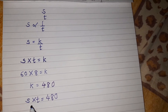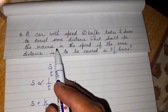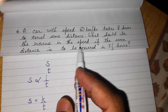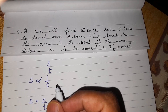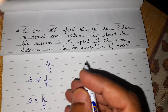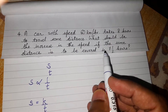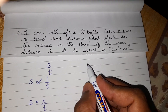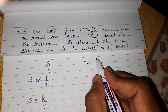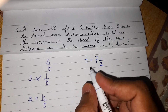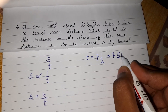Now we have the equation of proportion. The second part of the question asks: what should be the increase in speed if the same distance is to be covered in 7 and a half hours? To find the increase in speed, we first need to find the speed so that the distance is covered in 7.5 hours. So t is given as 7.5 hours.